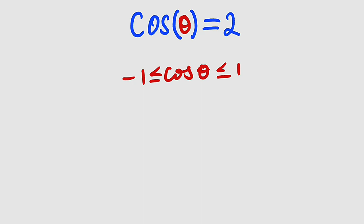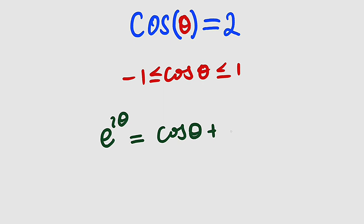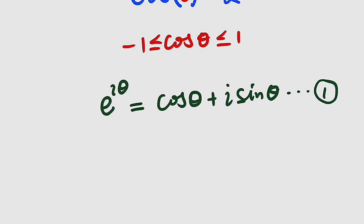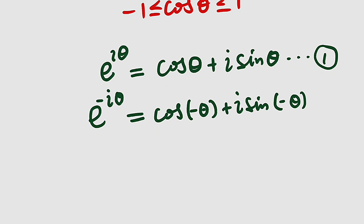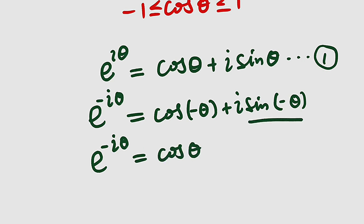We are going to use Euler's formula to establish cosine theta. Euler's formula states that e to the i theta equals cosine theta plus i sine theta — let's call this equation 1. Secondly, e to the negative i theta equals cosine of negative theta plus i sine of negative theta. Since cosine is an even function, cosine of negative theta equals cosine theta. And since sine is an odd function, sine of negative theta equals negative sine theta. So e to the negative i theta equals cosine theta minus i sine theta — let's call this equation 2.